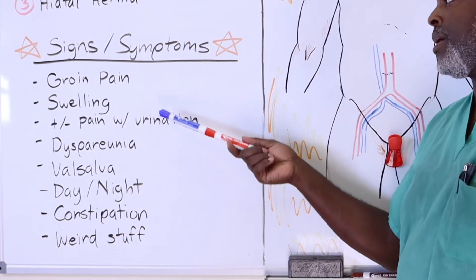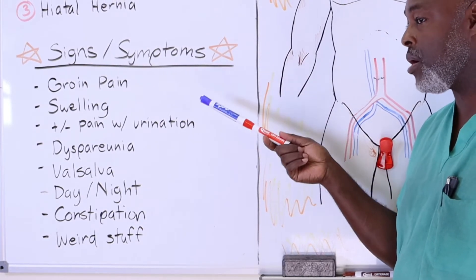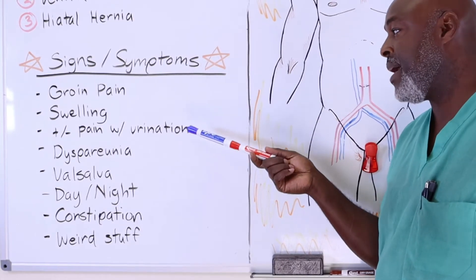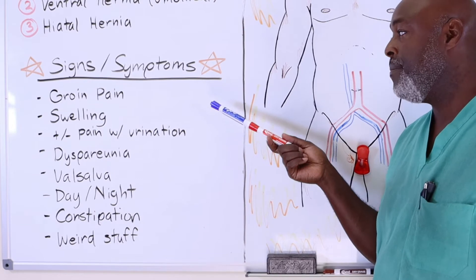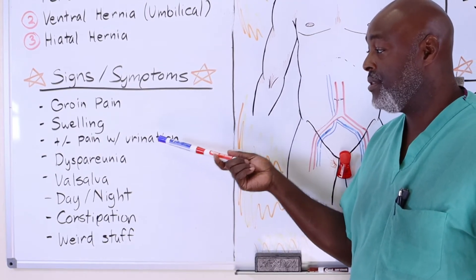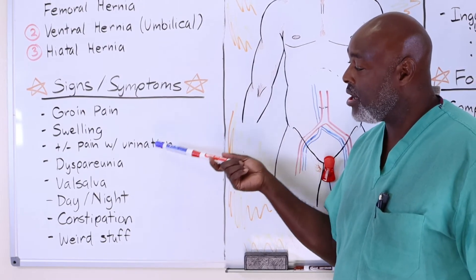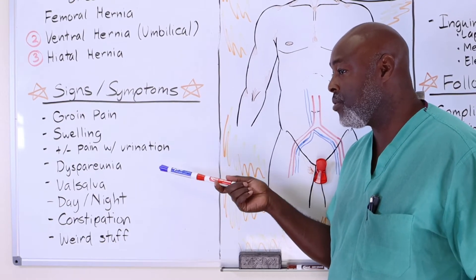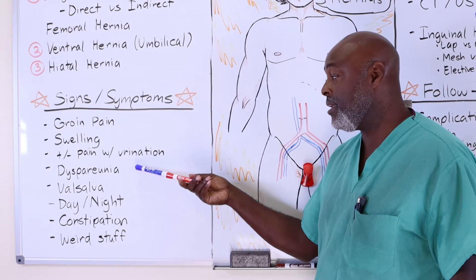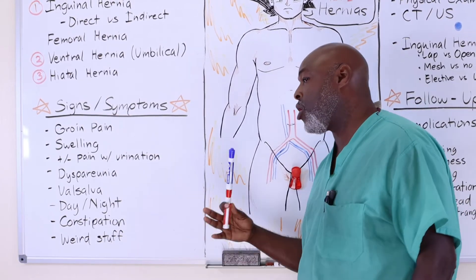Signs and symptoms include groin pain and swelling. The swelling usually comes and goes — if they lay down or in the morning in bed the swelling goes away, but when they wake up and walk it stays all day. You can have pain with urination depending on whether part of the bladder is in the hernia sac. Dyspareunia — pain with sex — is caused either by the swelling being uncomfortable or by pulling support ligaments into the hernia, which is a big reason many men come in with groin pain. Lifting or bearing down, basically a Valsalva maneuver, also causes pain and discomfort.